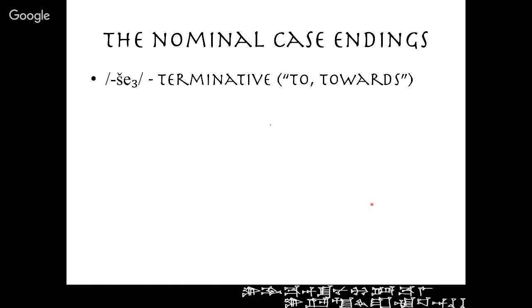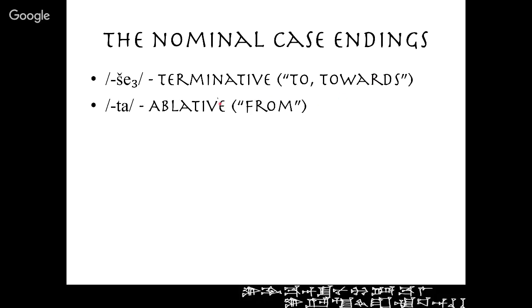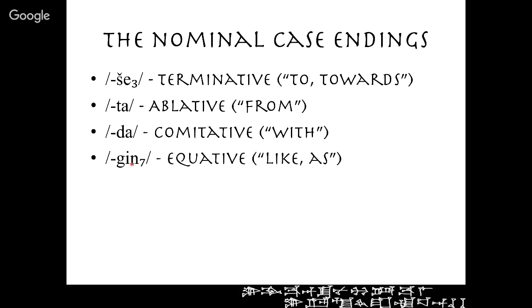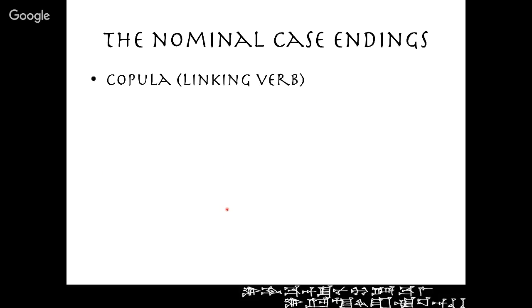The terminative — they call it 'šè' — means 'to' or 'toward.' So 'e₂-šè' is 'toward the house.' The ablative, meaning 'from' or 'away from,' is 'ta' — so 'e₂-ta' is 'from the house.' The comitative, meaning 'with,' is 'da' — so 'lugal-da' is 'with the king.' The equative, 'gin₇,' is the word 'like' or 'as,' so 'lugal-gin₇' would be 'like a king' or 'as a king.'